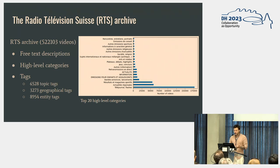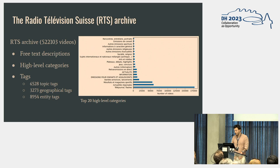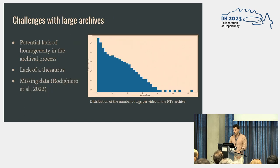As we can see with the high-level categories, there are a lot of videos in one single category, so it's very hard to use only those categories to make sense of the archive. If one searches for 'news,' for instance, they're going to get around 175,000 videos — you can't do that much with that. So we decided to use the tags to go further.